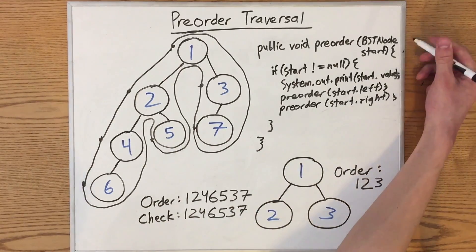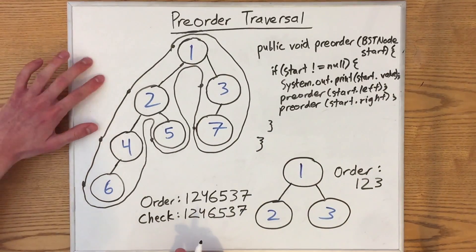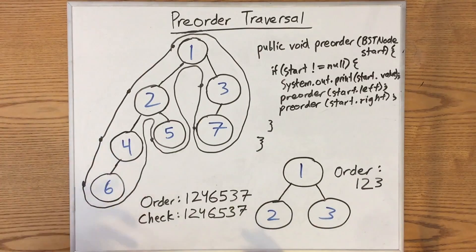We know that we're complete when we go all the way around the tree and end up where we started. So you can see that the orders match up, and these are two ways to look at the pre-order traversal: the recursive definition, and the graphical approach. That's pre-order traversal. Let's get into in-order.